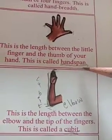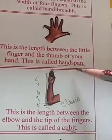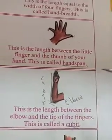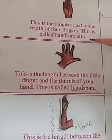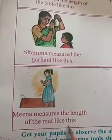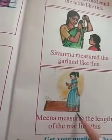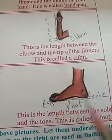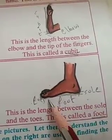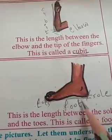Hand span. H-A-N-D-S-P-A-N. Hand span. Okay, last one. Meena measured the length of the mat. This is the mat. She is measuring it like a foot. So, this length is between the sole and the toes. How much distance is there? This is called a foot. F-O-O-T. Foot.